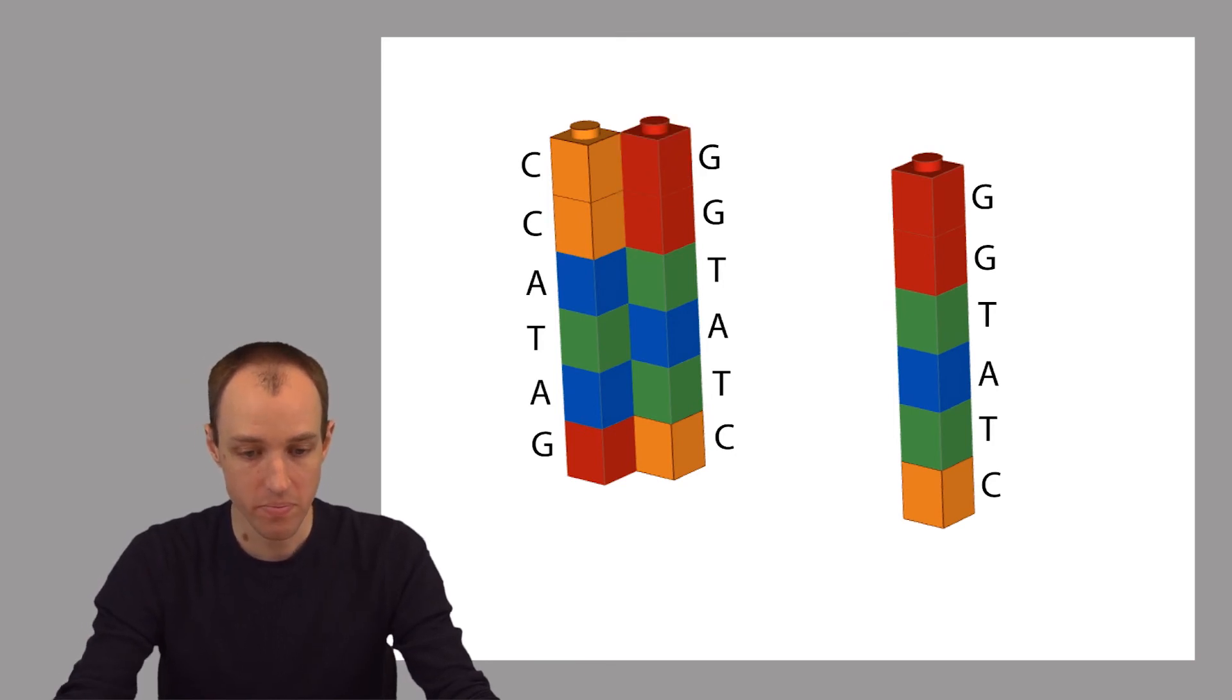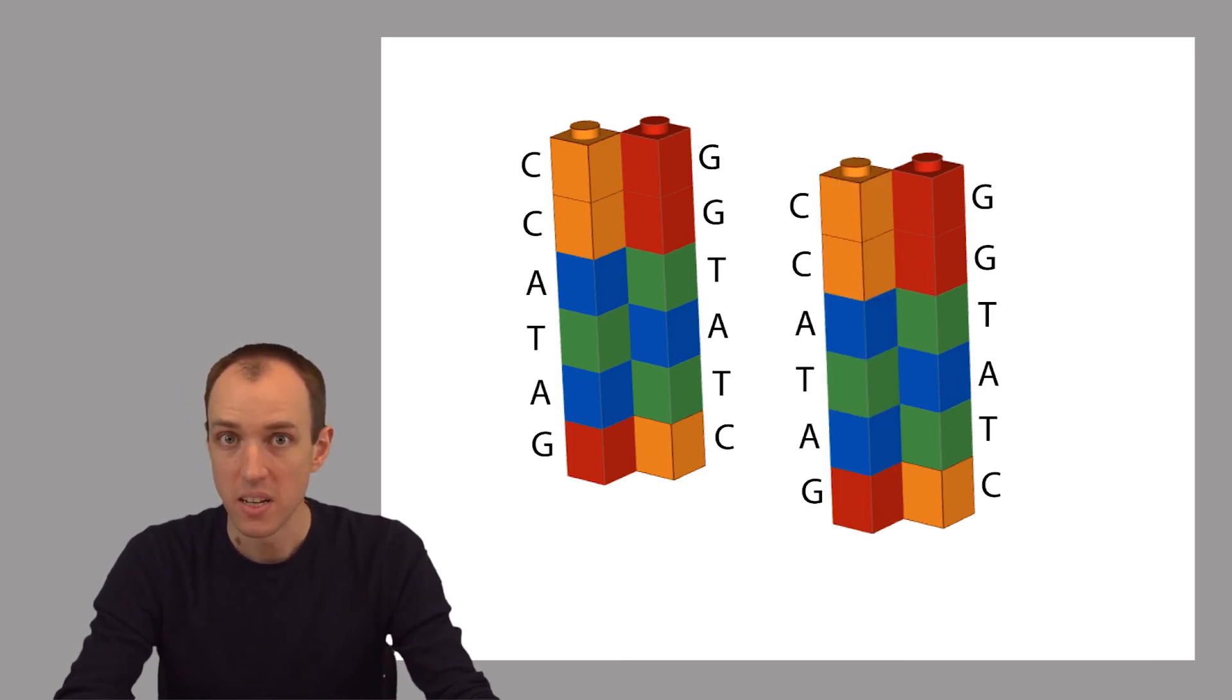The result is, if we do this for both of the template strands, not just the one on the left but also the one on the right, then the result is we now have two double-stranded copies of the original DNA.